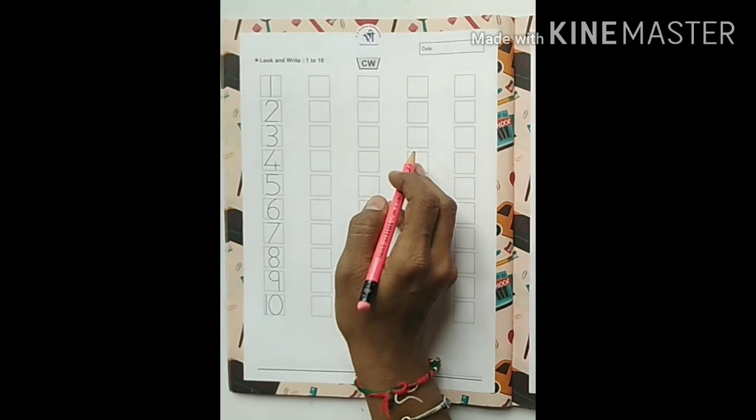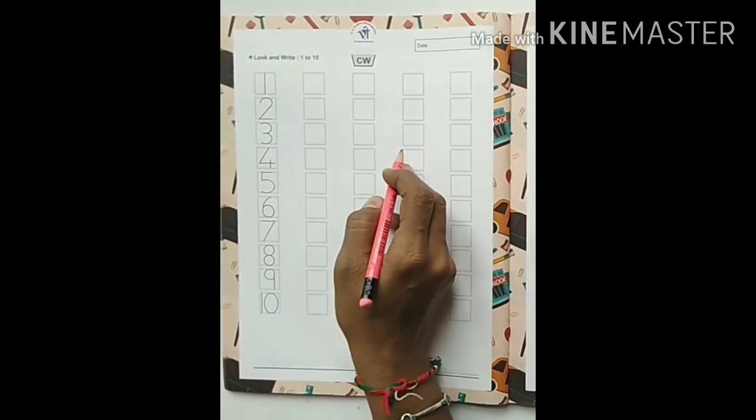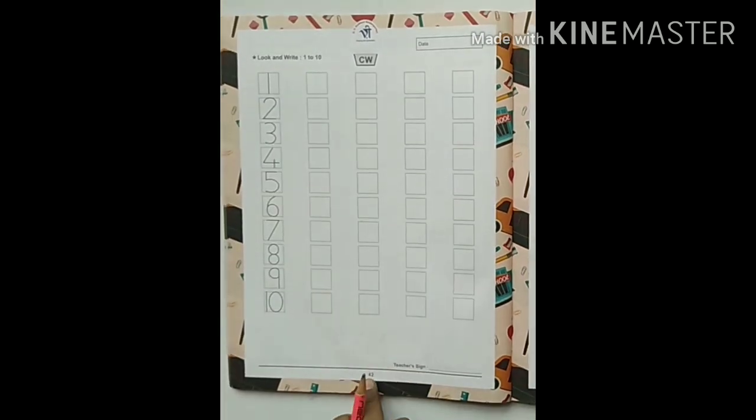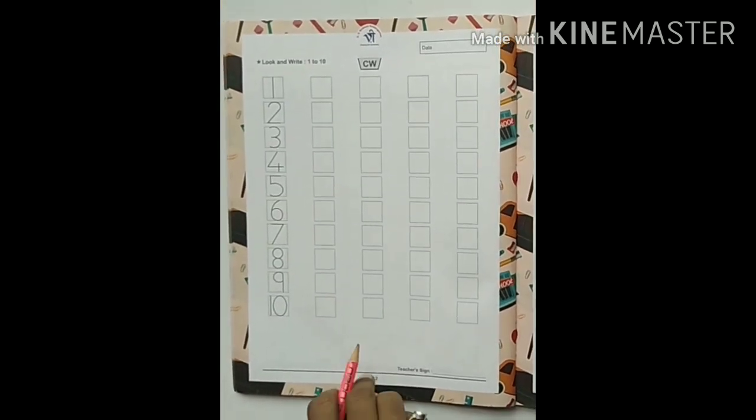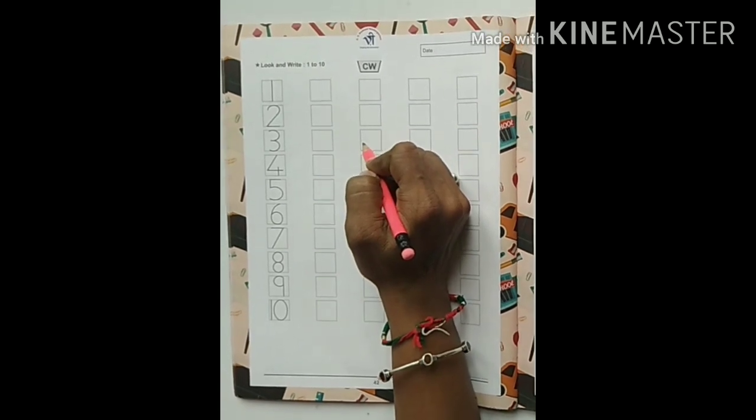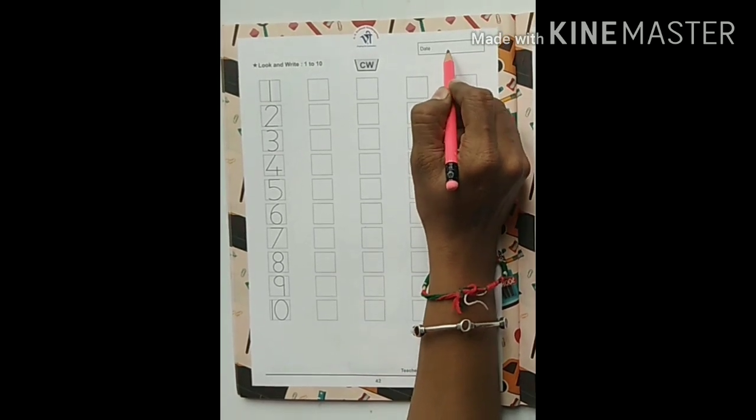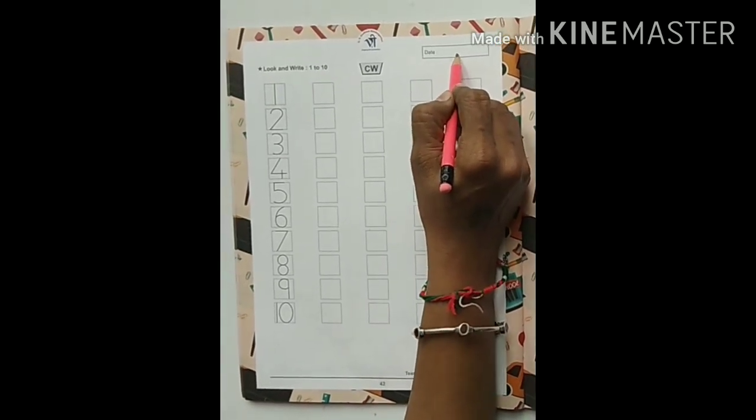My dear students, now you already know how to write 1 to 10 numbers. Now in this page 42, we have to write 1 to 10 numbers continuously. Let's start. In this box we have to write the date.